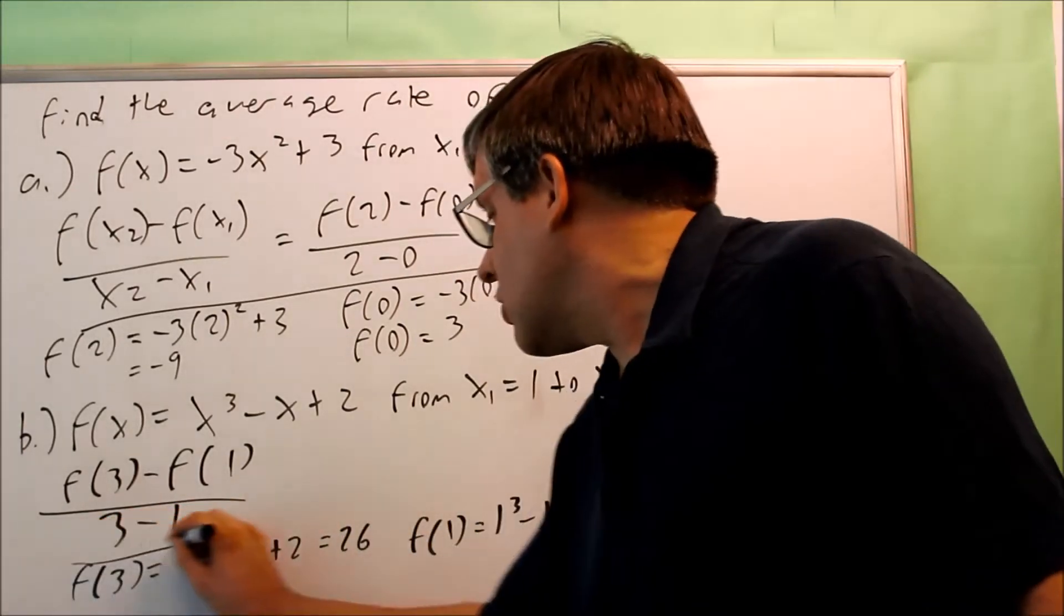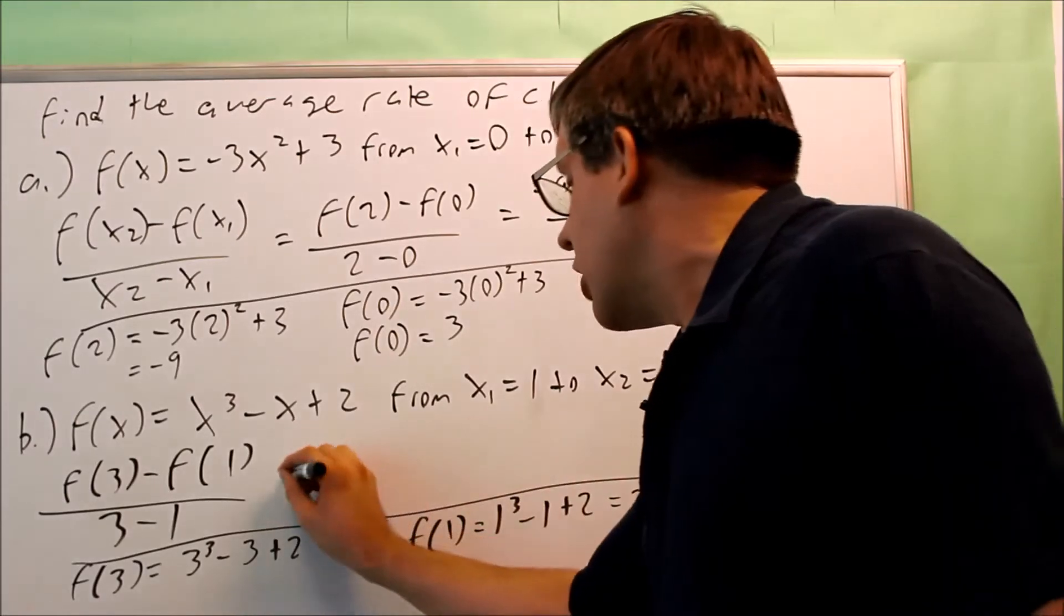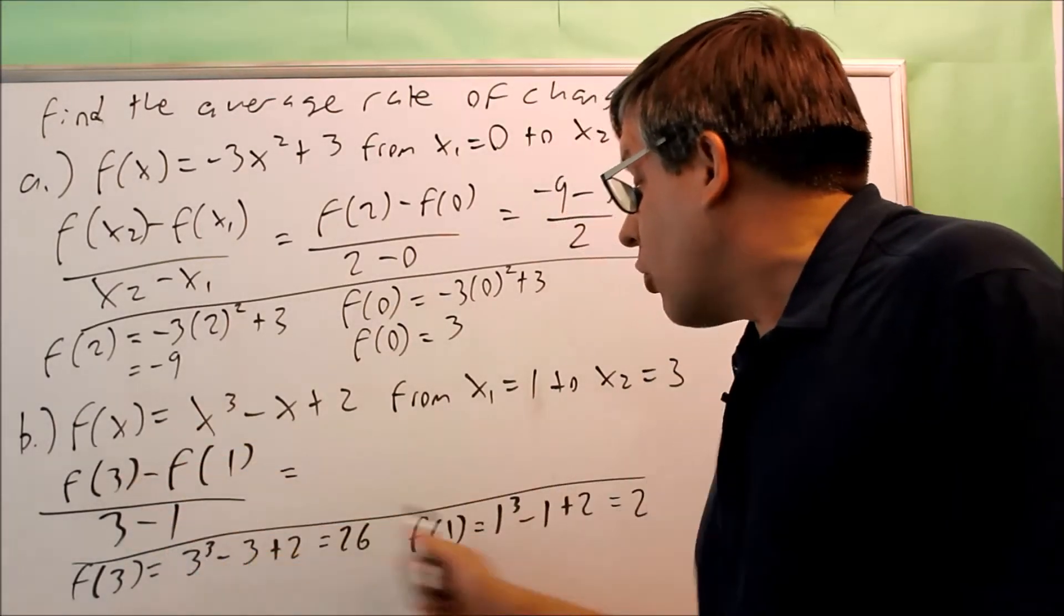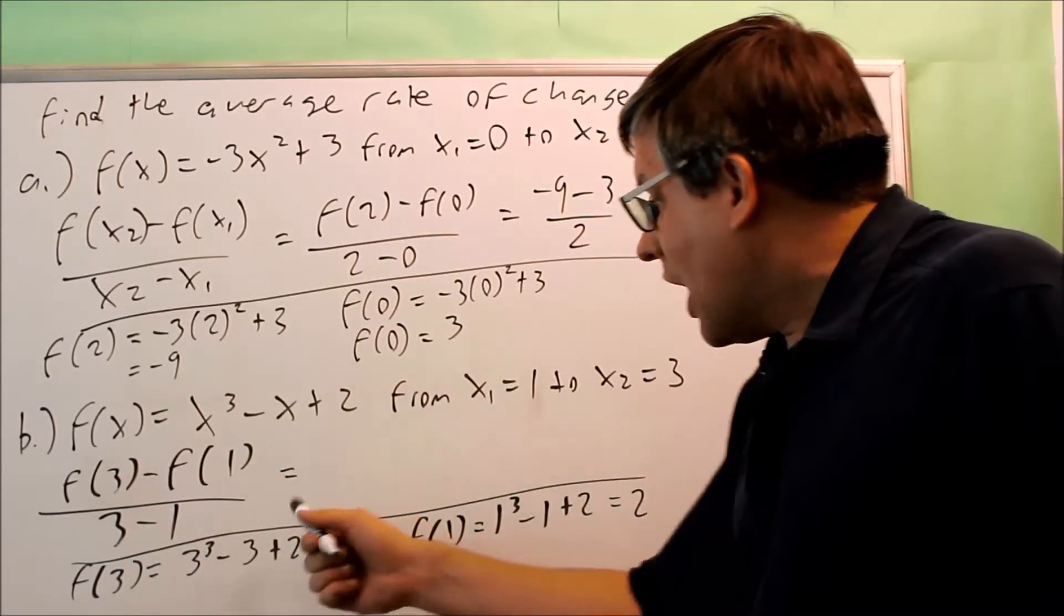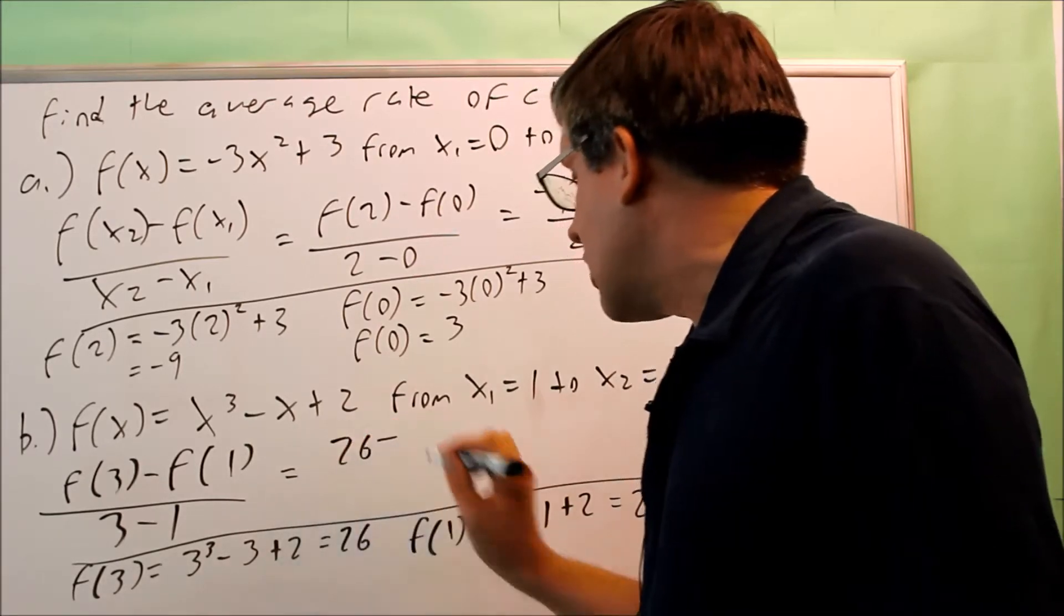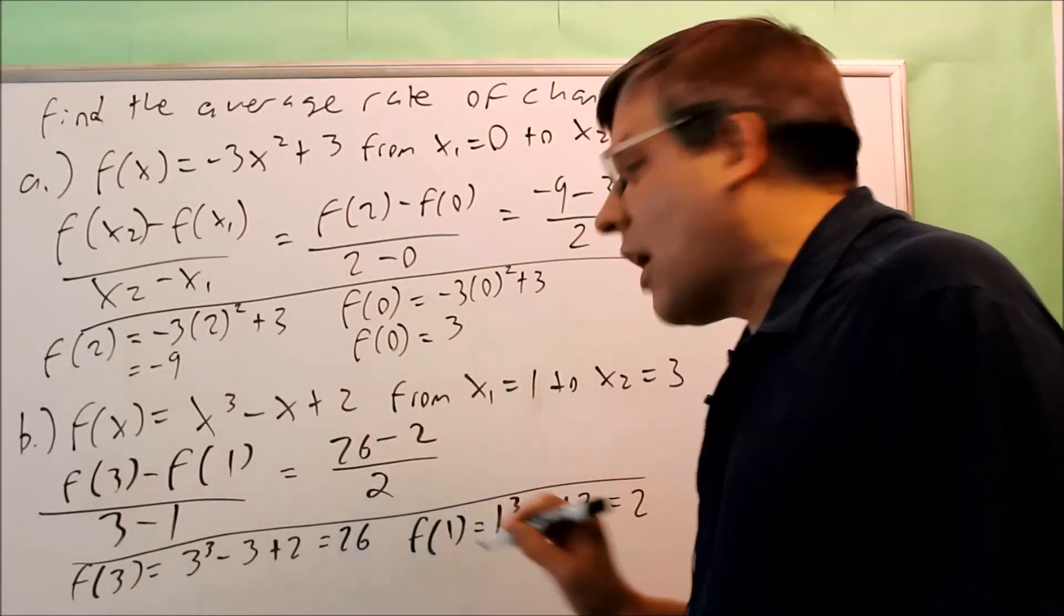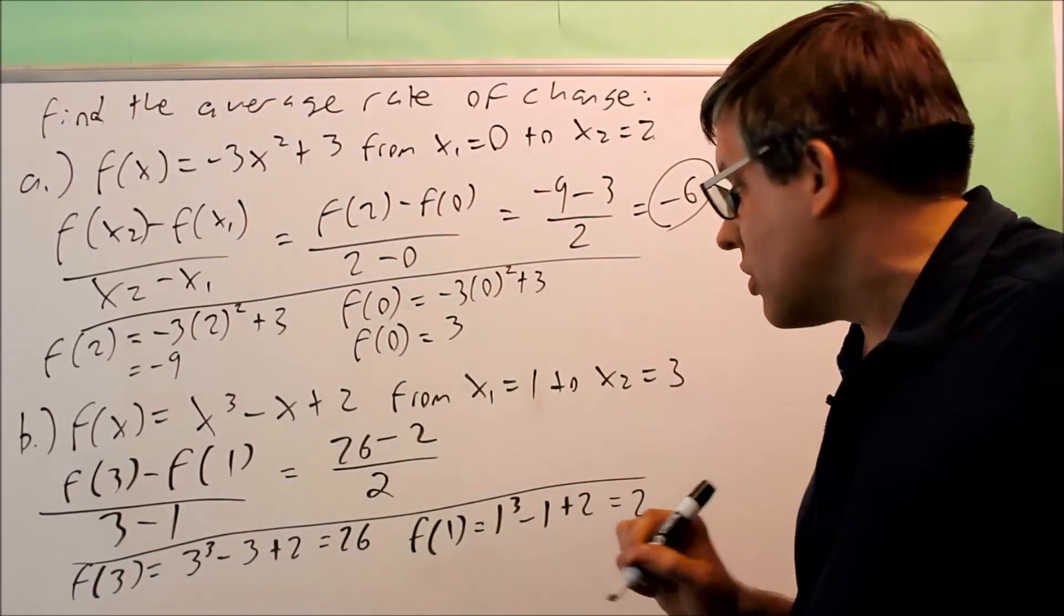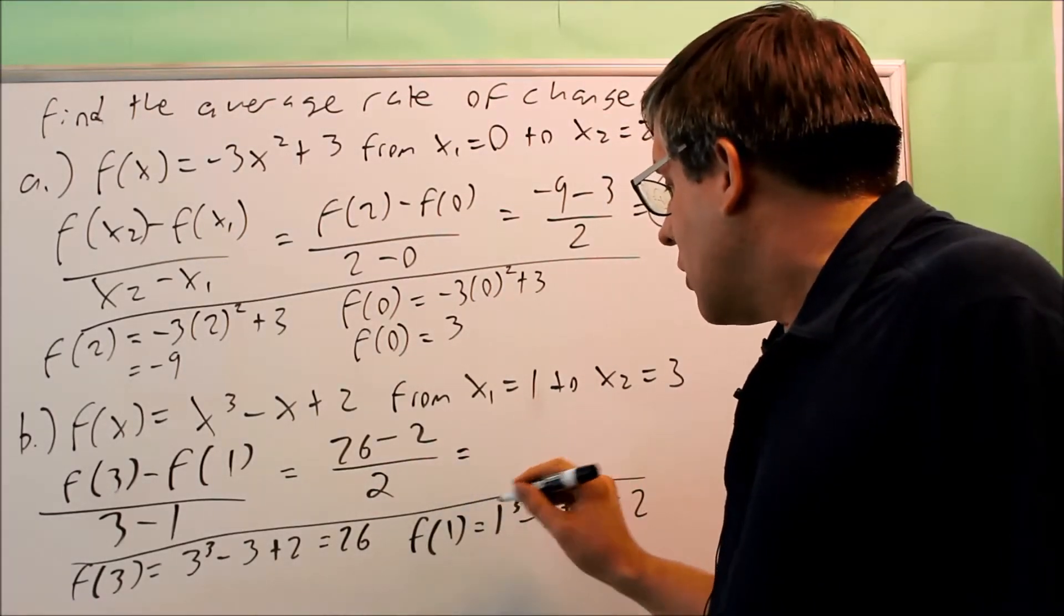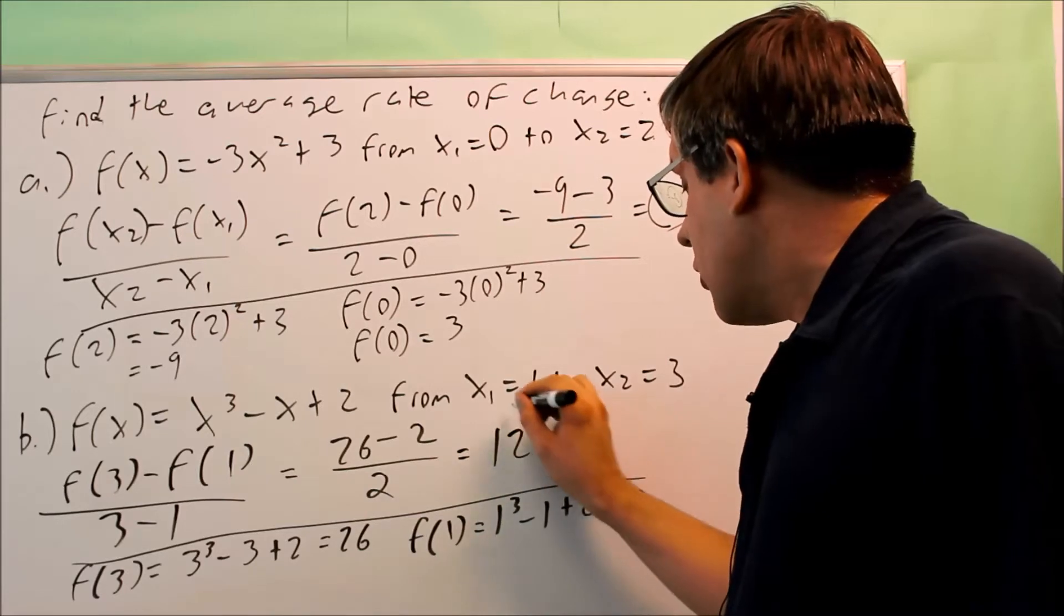So if I put that back into this formula, putting it back into here, now we've found these values separately. f of 3 is equal to 26, f of 1 is equal to 2, and then down below I have 3 minus 1, that's equal to 2 also. Simplify it, 24 over 2 is going to give you 12.